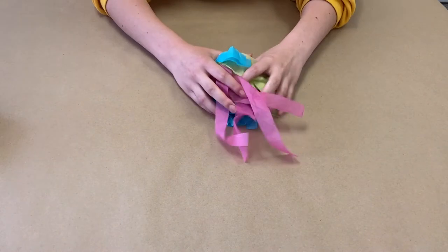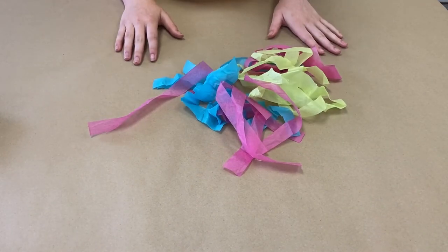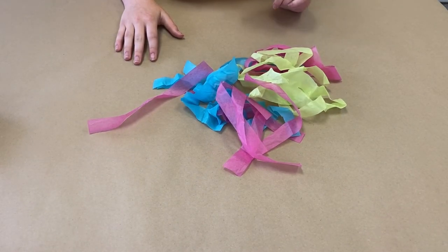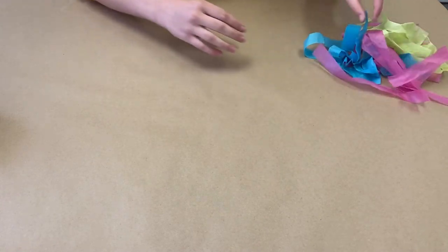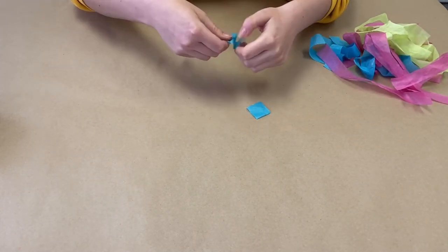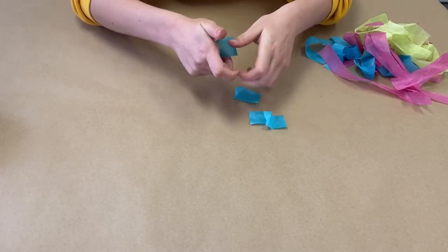First, choose what colors of tissue paper you would like to use for your jellyfish. I've chosen pink, blue, and green. Next, take the strips and break them into even smaller pieces.